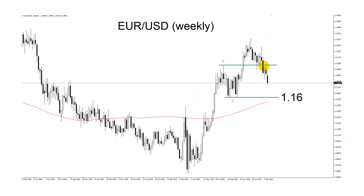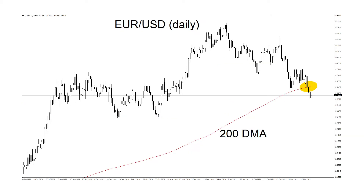First up we've got the euro dollar chart. Five weeks ago I asked if rising bond yields would send the euro dollar under 1.20 — the answer was a resounding yes. Looking at the weekly chart, we can see the pullback has gone beyond the previous high from August, so the next major level to test is the previous low near 1.16. On the daily chart, the euro dollar has closed below its 200-day moving average, which is one indication the trend has turned bearish.